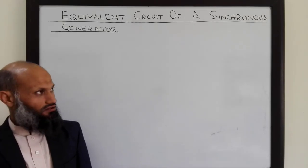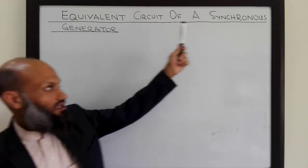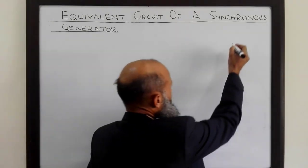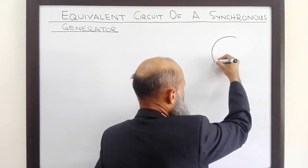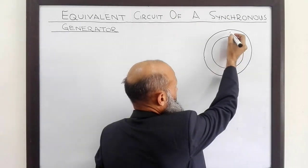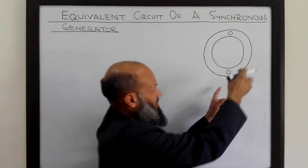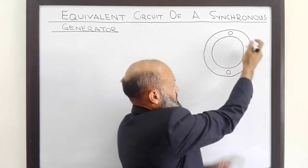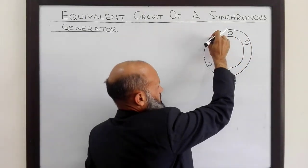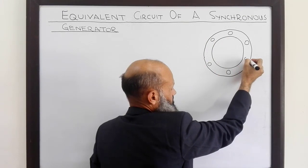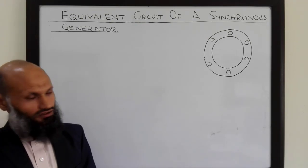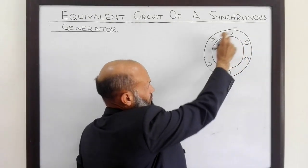Assalamuaikum. In today's lecture we shall talk about the equivalent electrical circuit of a synchronous generator. A synchronous generator consists of a stationary part called the stator. On this stator we have a set of three-phase coils: one coil here, another coil placed at 120 degrees from this coil, and the third coil at another 120 degrees. The stator is also called the armature because voltages are induced in the coils placed on the stator.